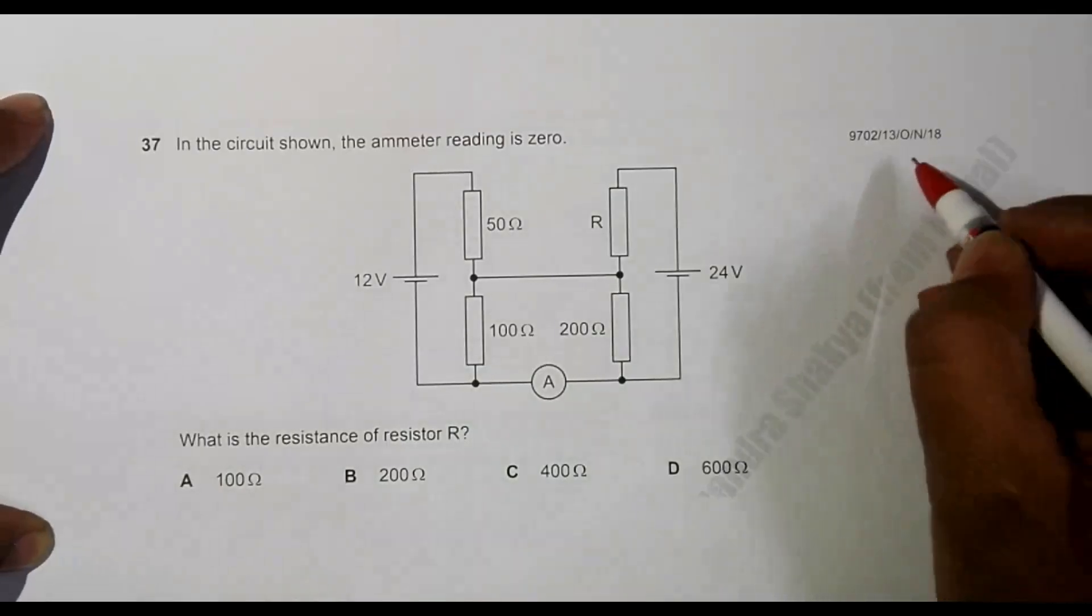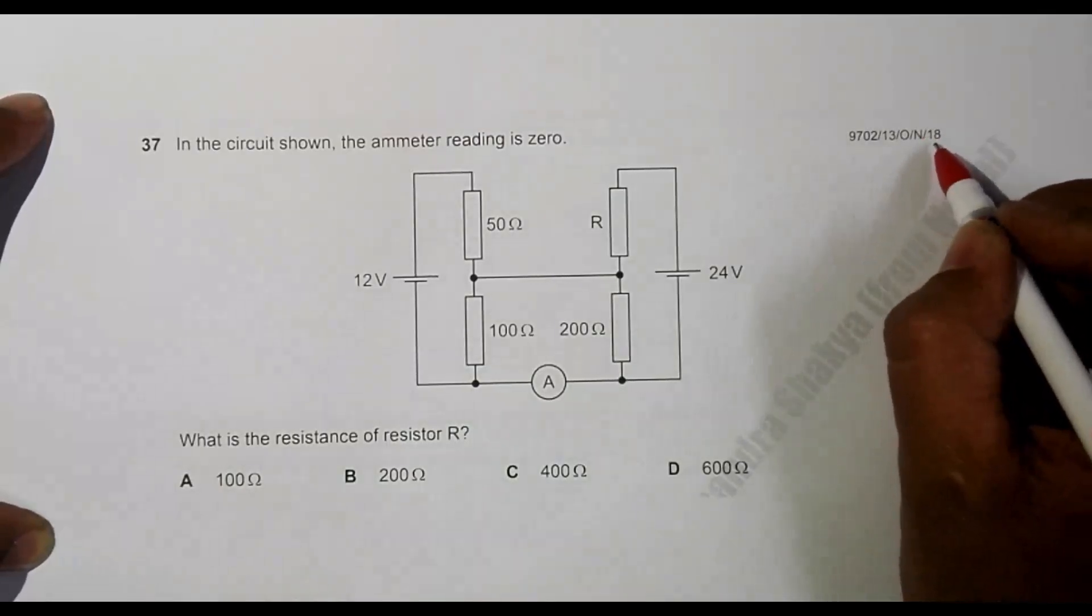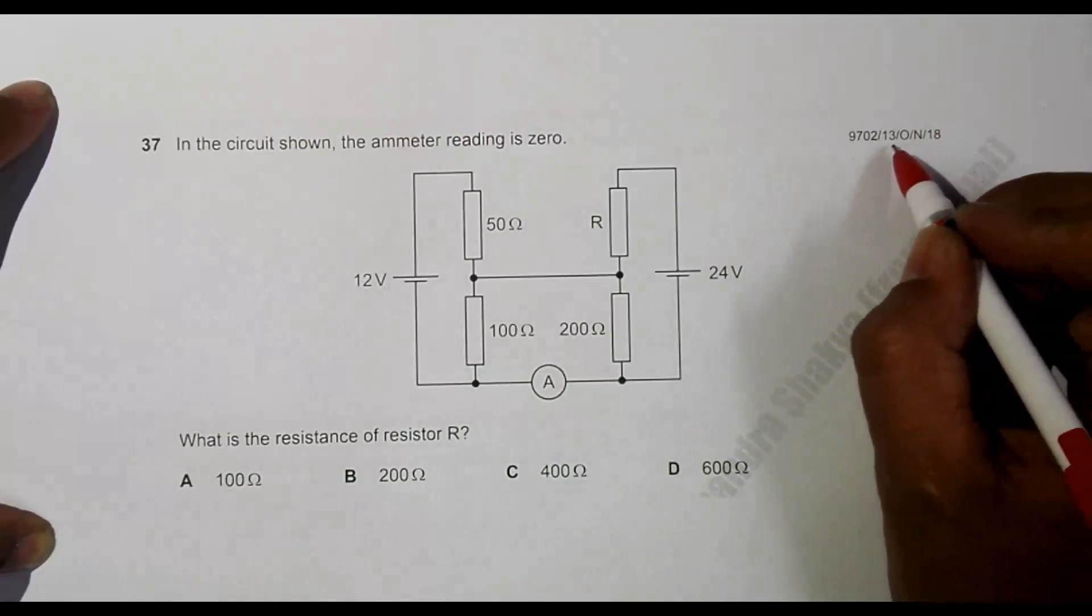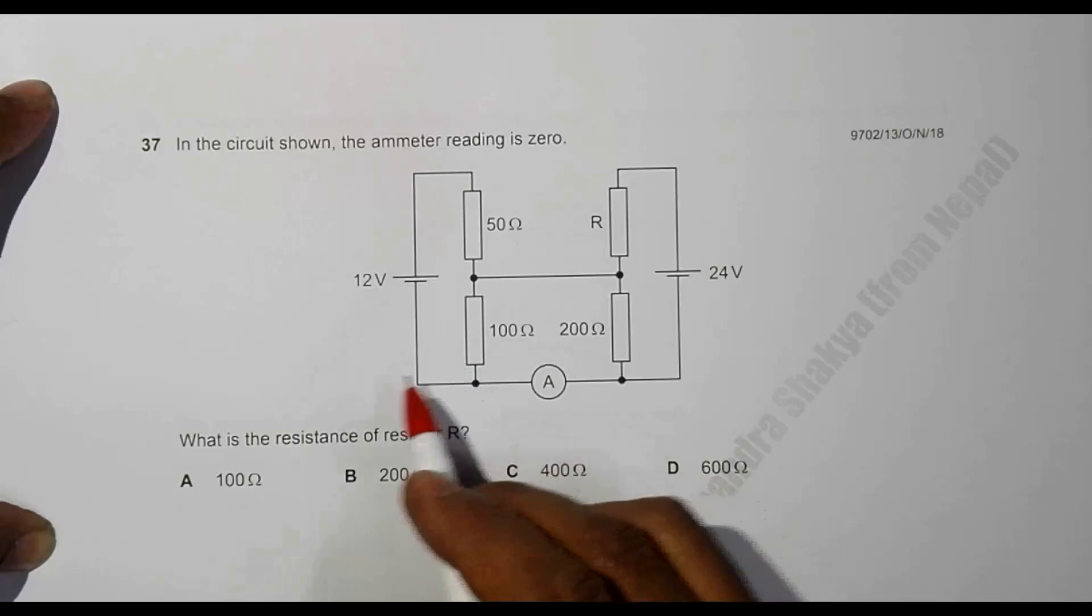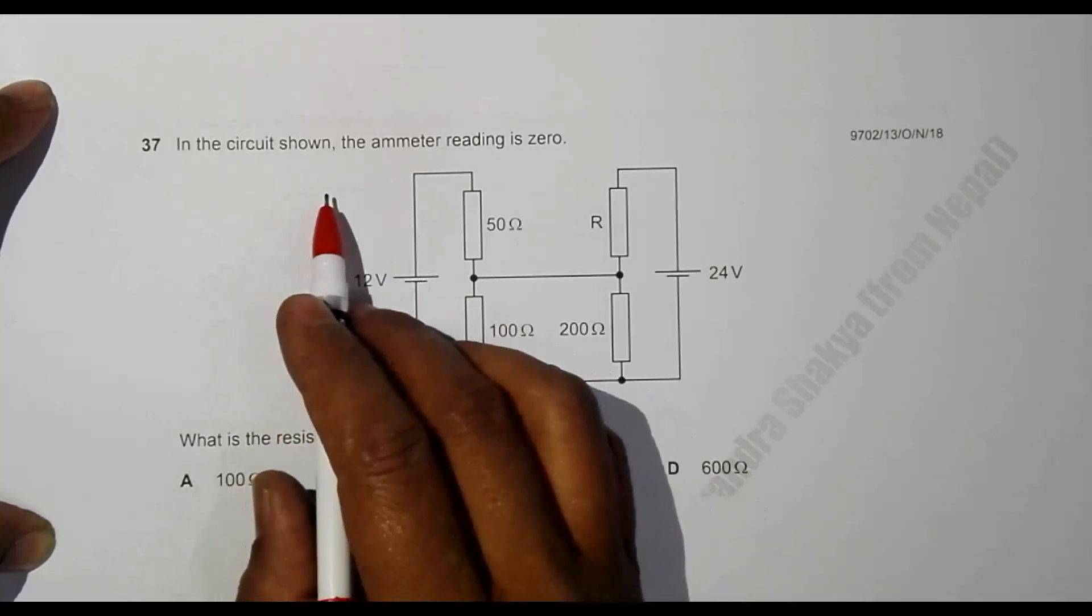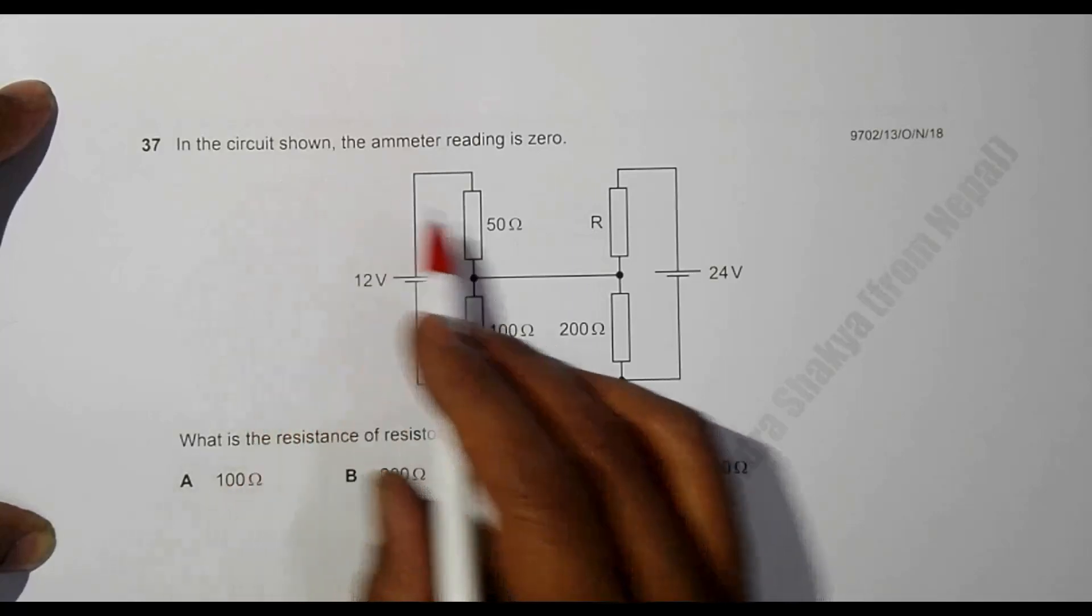Hello folks, these are the brand new questions from 2018 October-November Paper 13, question number 37. The question belongs to the chapter of electricity.